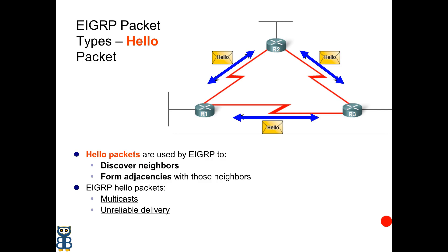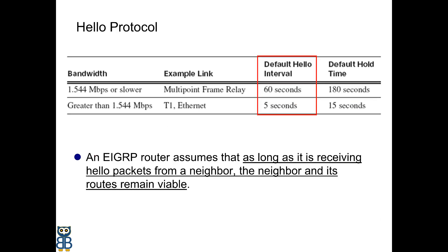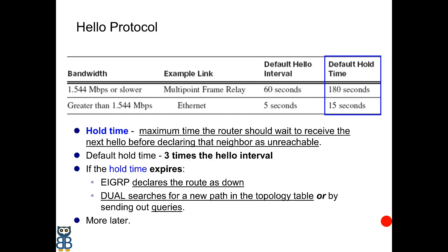On multipoint and non-broadcast multi-access networks where Frame Relay, ATM, and X.25 technologies are used, hello packets are sent as unicast every 60 seconds. An EIGRP router assumes that as long as it is receiving hello packets from a neighbor, the neighbor and its routes remain viable. In addition to the hello timer, EIGRP neighbors have a hold timer, which indicates how long a router should wait before marking a neighbor inactive. By default, the hold timer is three times the hello timer — 15 seconds on high-speed links and 180 seconds on slower links.